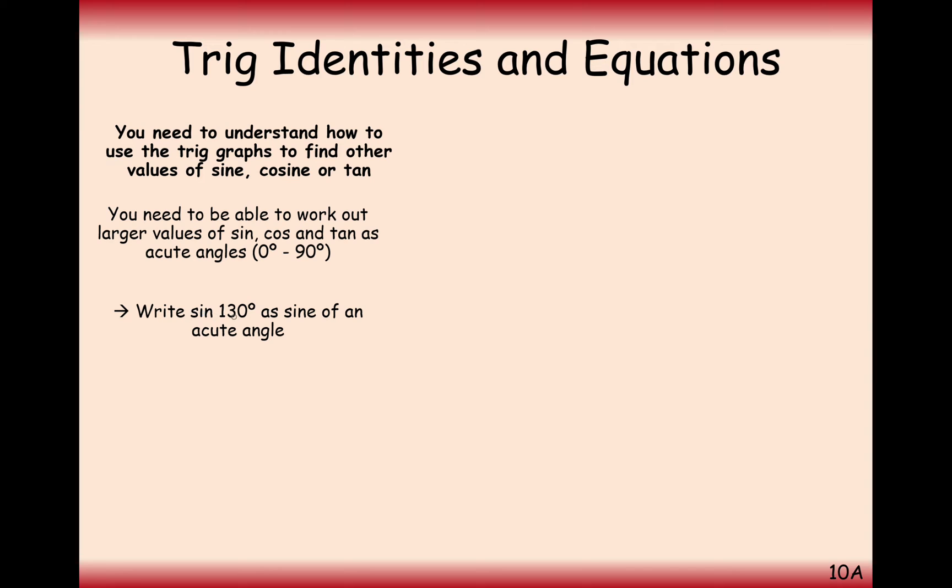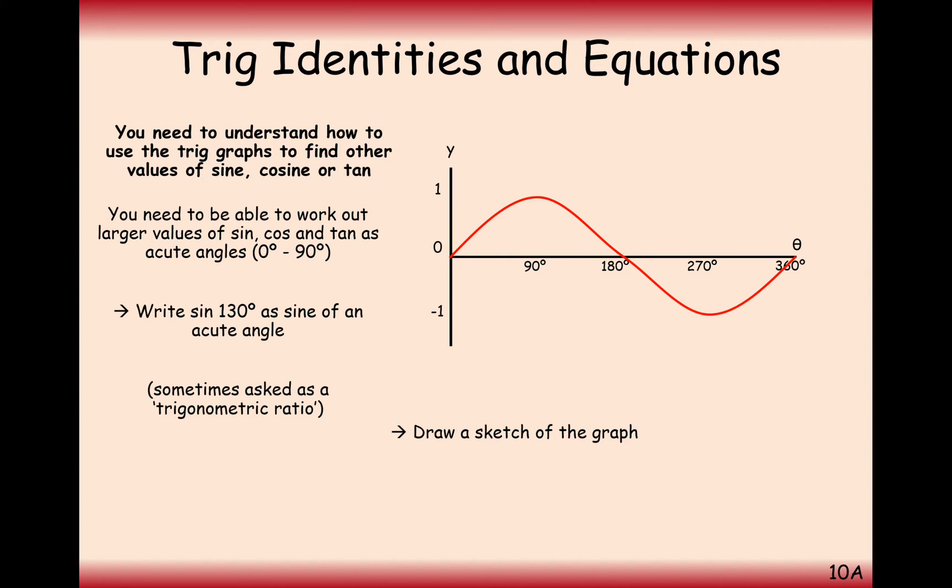What we're going to look at is the question of writing sine of 130 as sine of an acute angle. So what we'd need here is a little sketch, it doesn't need to be perfect, of the sine graph to give us a rough shape of it and 130 is going to be the marker here.